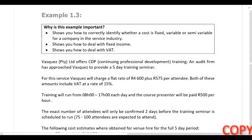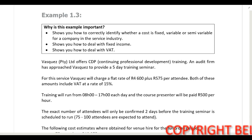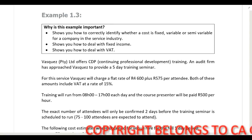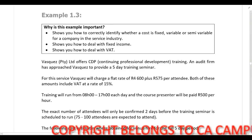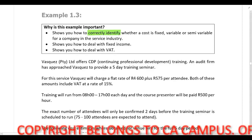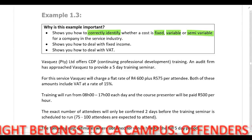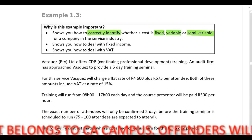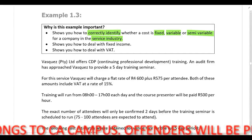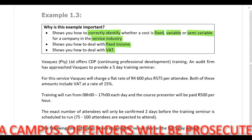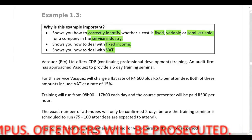Please work through Example 1.3 on your own. The suggested solution is very detailed and includes comments to support all of the calculations, so I doubt you'll have any problems. If you do struggle with anything, please just pop me an email. This example is important because it shows you how to correctly identify whether a cost is fixed, variable, or semi-variable when dealing with a company in the service industry. It also shows you how to deal with fixed income and VAT.